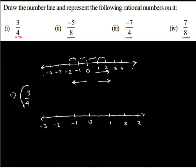To represent 3 upon 4, we have to divide the unit length between 0 and 1 into 4 equal parts. Because, the denominator in the rational number 3 upon 4 is 4. Now, let us divide it: 1, 2 and 3. So, we have 1, 2, 3 and 4 parts.